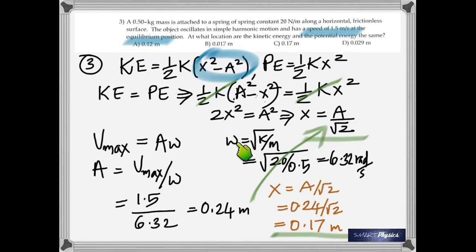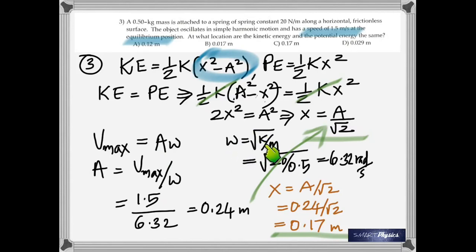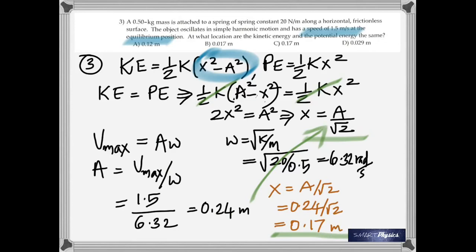Maximum velocity is a times omega, and omega is the square root of k by m — so you get omega from there and plug it back in. Amplitude a equals v-max divided by omega, giving 0.24 meters. Therefore x equals 0.24 divided by root 2, which gives 0.17 meters. There are at least three steps in solving this problem. Easier said than done, I know.